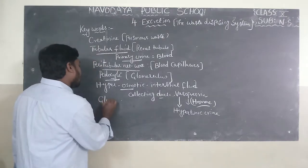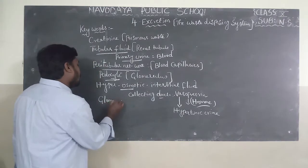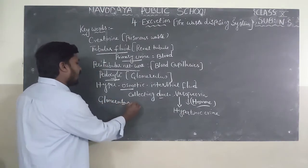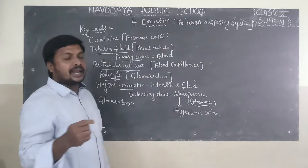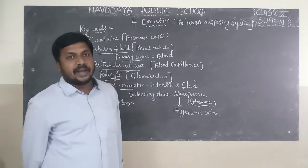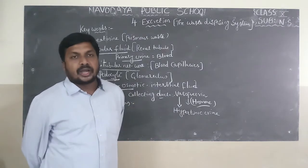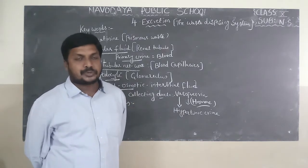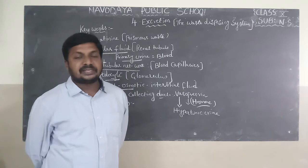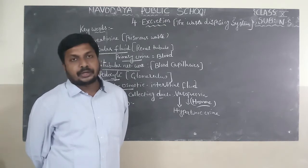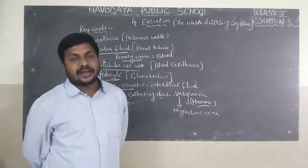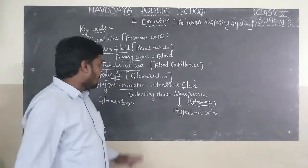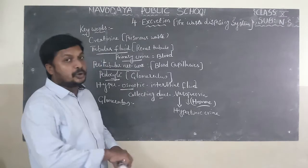Next keyword is glomerulus. The renal artery produces a branch called the afferent arteriole to the Bowman's capsule. This afferent arteriole produces a fine network of capillaries that is known as the glomerulus.